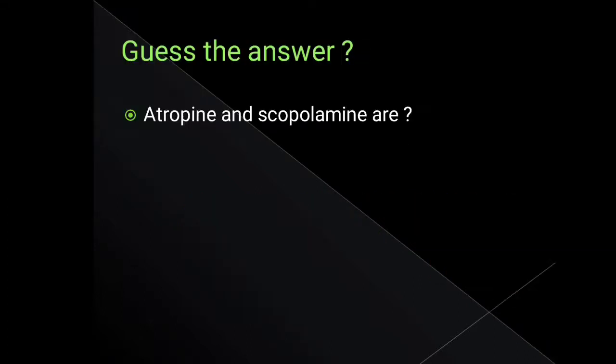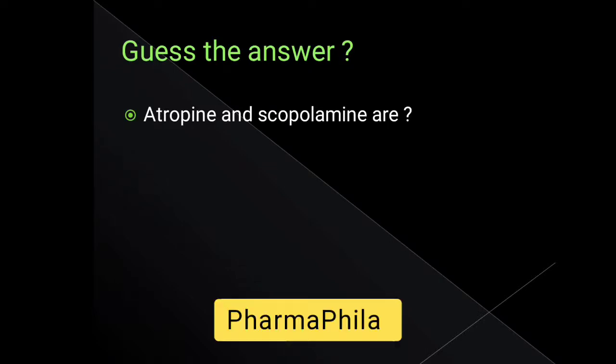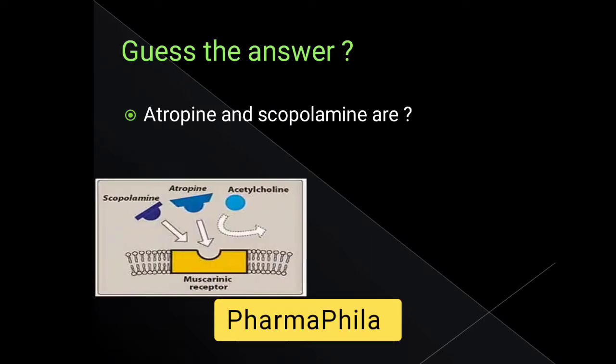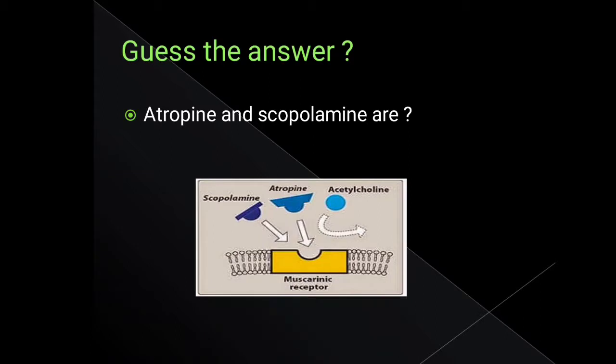Question number 1: Atropine and scopolamine are? Atropine and scopolamine are muscarinic receptor antagonists, as you can see in the picture.